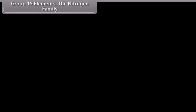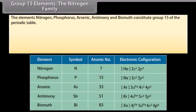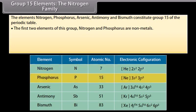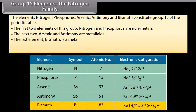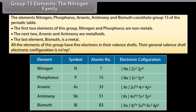Group 15 elements — the nitrogen family. The elements nitrogen, phosphorus, arsenic, antimony and bismuth constitute group 15 of the periodic table. The first two elements, nitrogen and phosphorus, are non-metals; arsenic and antimony are metalloids; and the last element, bismuth, is a metal. All elements of this group have 5 electrons in their valence shell; their general valence shell electronic configuration is NS2, NP3.